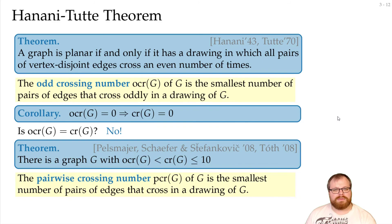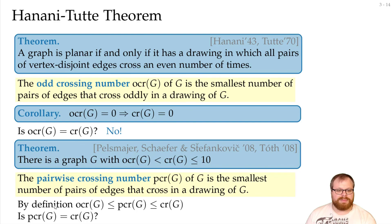But what about the pairwise crossing number? The pairwise crossing number, we just look at pairs of edges that cross at all in a drawing. And clearly, by definition, the odd crossing number is at most a pairwise crossing number, and the pairwise crossing number is at most a crossing number.